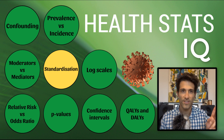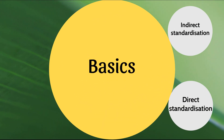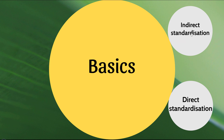Let's get straight into standardization. The way I like to run these videos is to go over the basics first, developing your intuition around the concept. After that, we'll look at the two main types of standardization: indirect standardization, which incorporates standardized mortality ratios or SMRs, and direct standardization. I'll be using examples related to the coronavirus — one from the USA and one looking at the outbreak in India.